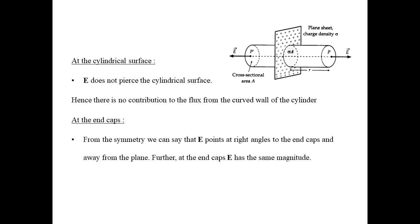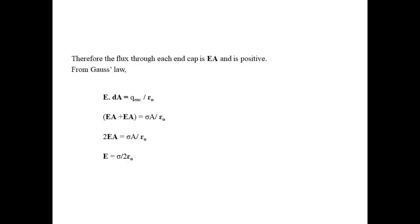At the end caps, from the symmetry, the electric field points at right angles to the end caps and away from the plane. At the end caps, E has the same magnitude. Therefore, the flux through each end cap is E times A and is positive. From Gauss's Law, the integral of E dot dA equals 1 by epsilon-nought times the charge enclosed. Here we have two end caps, so E times A plus E times A equals sigma times A by epsilon-nought. Then 2EA equals sigma A by epsilon-nought. From this, the electric field E equals sigma by 2 epsilon-nought.